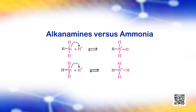Basicity of amines is related to their structure. The basic character of an amine depends upon the ease of formation of the cation by accepting a proton from the acid. The more stable the cation is relative to the amine, the more basic is the amine. Due to the electron-releasing nature of the alkyl group, it pushes electrons towards nitrogen and thus makes the unshared electron pair more available for sharing with the proton of the acid. Moreover, the substituted ammonium ion formed from the amine gets stabilized due to the dispersal of the positive charge by the +I effect of the alkyl group.